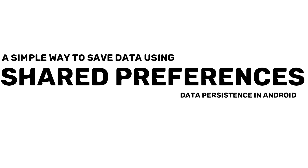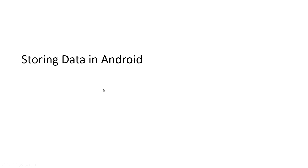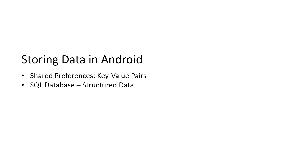Hello, this is Abhishek with a tutorial on shared preferences. In Android, there are multiple ways to store data in phone memory, like text files, key-value pairs, a database for complex data, and in the form of multimedia like images and other file formats. This is called data persistence, and each method has its own advantages and use cases.